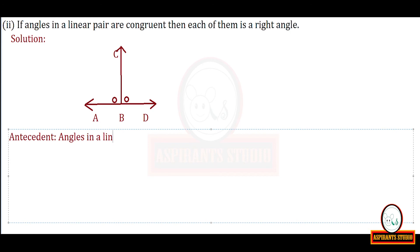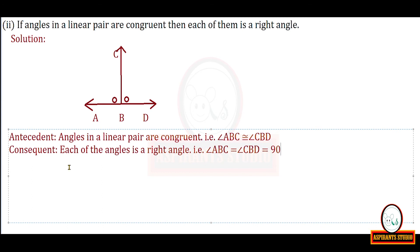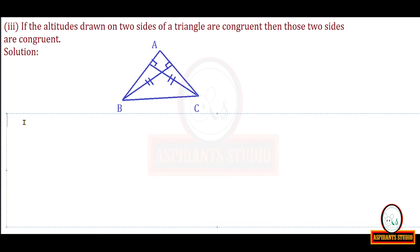Now the second question: 'if angles in a linear pair are congruent, then each of them is a right angle.' Draw the figure, but do not show the right angle marking on it, because that is the part to be proved. Show only what is given — the congruence marking. The antecedent is: angle ABC is congruent to angle CBD. The consequent to be proved is that the two angles are right angles, each of measure 90 degrees.